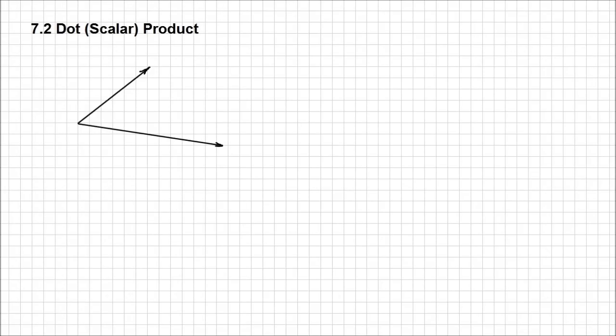In this lesson I'm going to talk about the dot product. We also call this a scalar product. The dot product refers to the way it's written on the paper using that dot for the multiplication. The scalar product gives you a very clear idea as to what the result of this product is going to represent. The dot product between two vectors is going to result in a scalar.